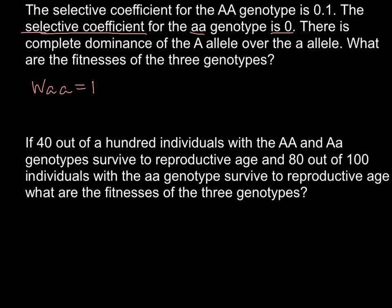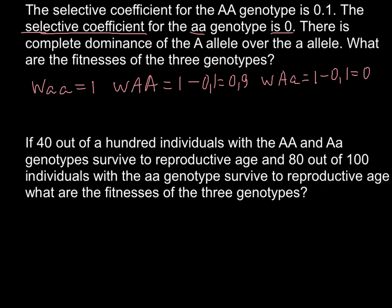We also have two more genotypes. W for the homozygous dominant — we have to subtract the selective coefficient from 1, that is 1 minus 0.1, and the answer is 0.9. The other genotype is the heterozygous, and the result would be the same, because we have complete dominance of the dominant allele capital A over the recessive allele small a. So here we also get 1 minus 0.1 equal to 0.9.